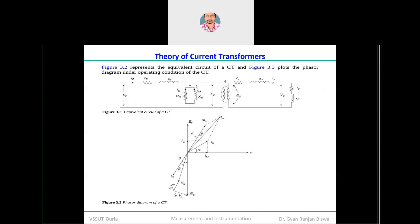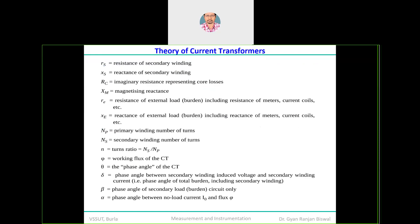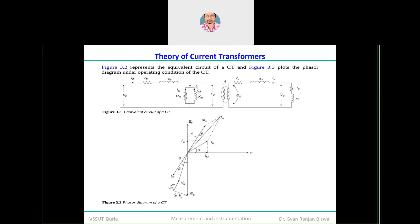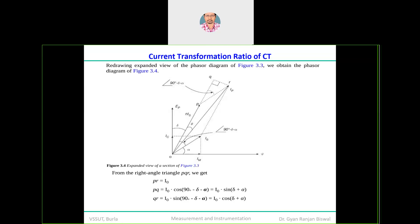The equivalent circuit diagram of the current transformer shows the primary and secondary sides, and the phasor diagram is drawn accordingly. IC is the core current, IM is the magnetizing current, I0 is the no-load current. Delta is the phase angle between the secondary winding induced voltage and secondary winding current. Alpha is the angle between the no-load current and the induced flux. Beta is the secondary load current.